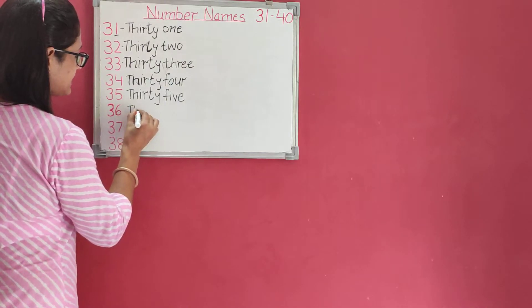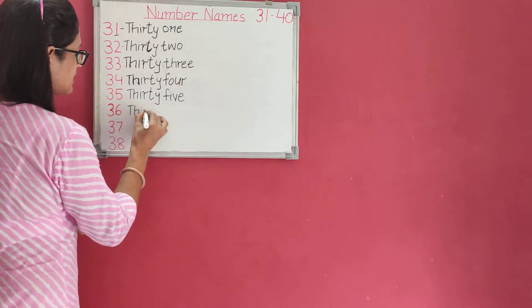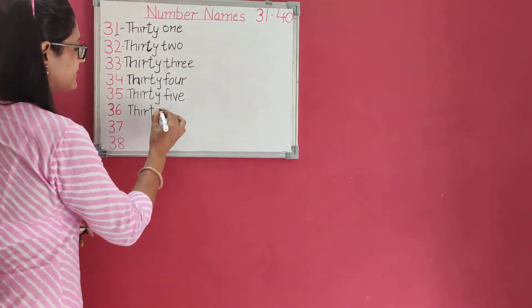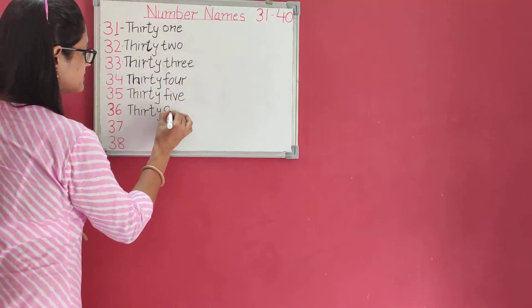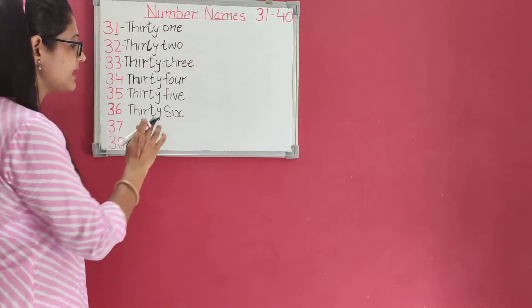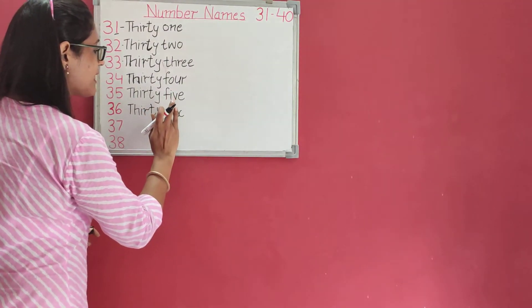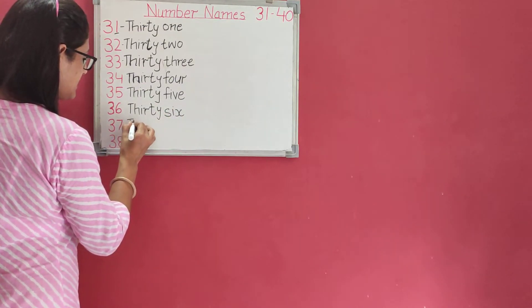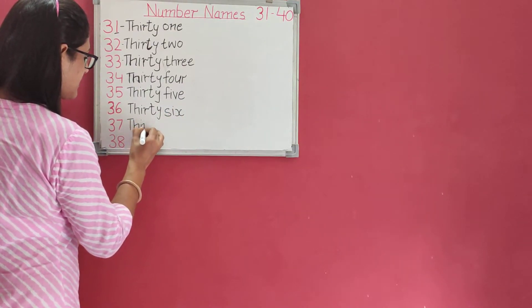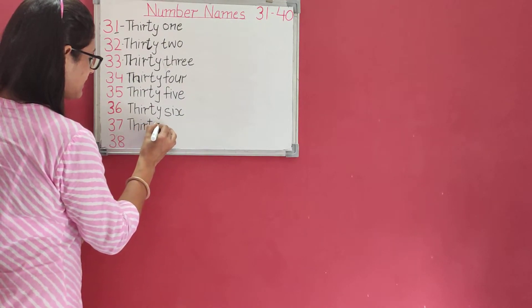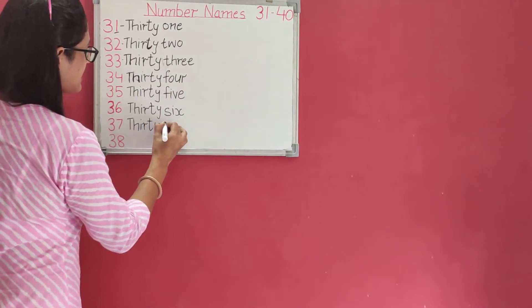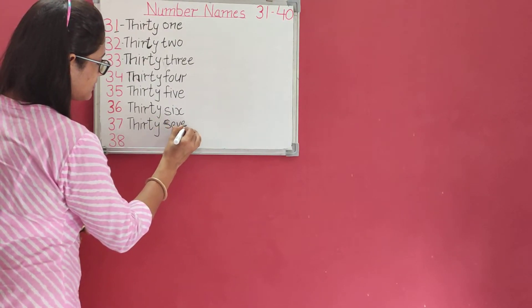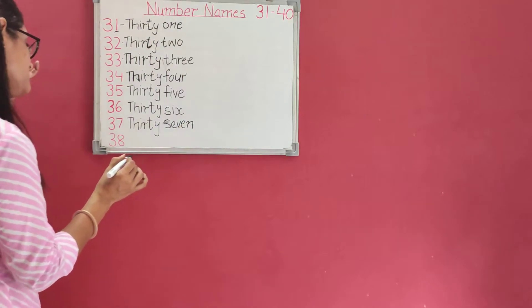Then, thirty-six: T-H-I-R-T-Y, thirty, S-I-X, six. T-H-I-R-T-Y, thirty-seven: S-E-V-E-N, seven.